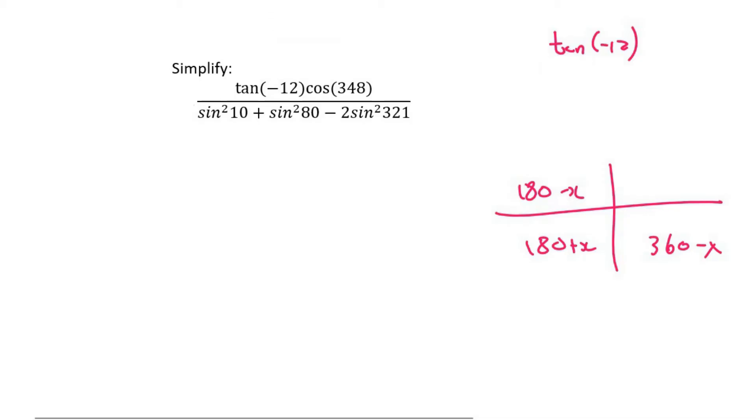Negative 12 is not on the diagram because this diagram goes from 0 around to 360. So what we do is we add 360 degrees, because remember, we are allowed to do that. Plus 360, and so that's going to give us the tan of 348.